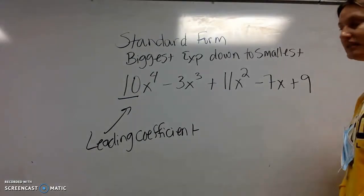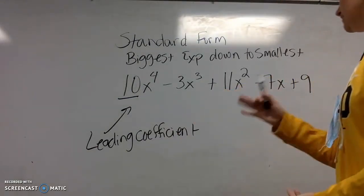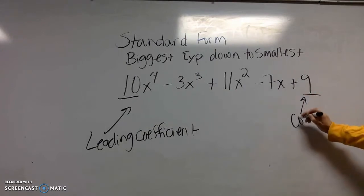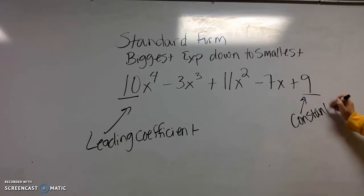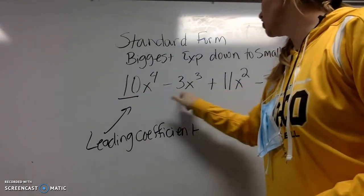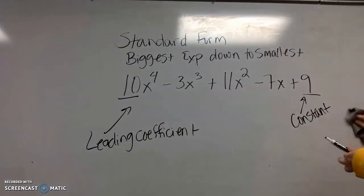It's this one right here. And remember that the number that stands alone is called the constant. All these other numbers in front are called coefficients.